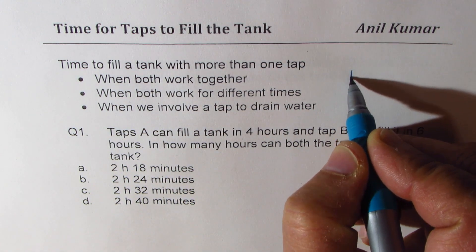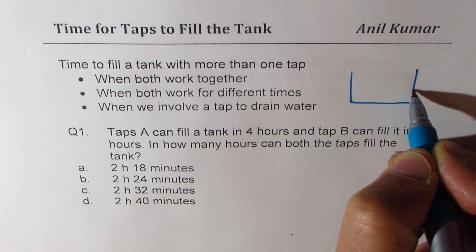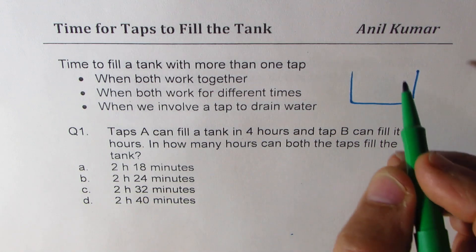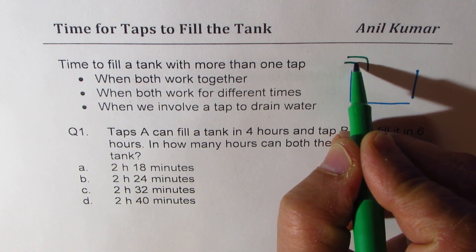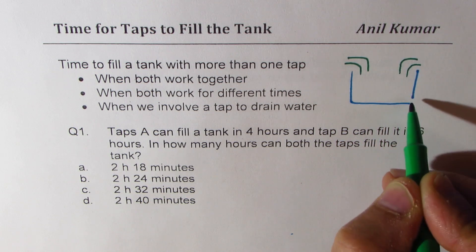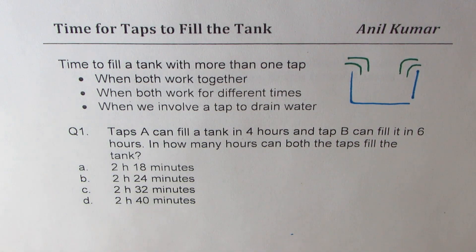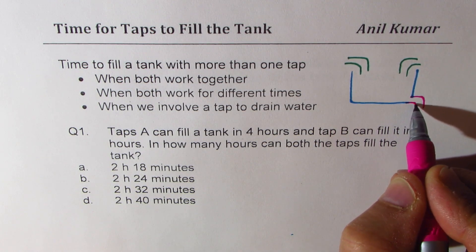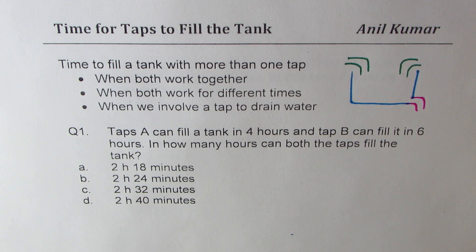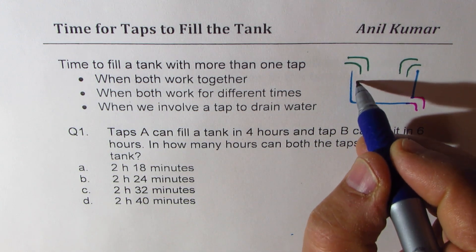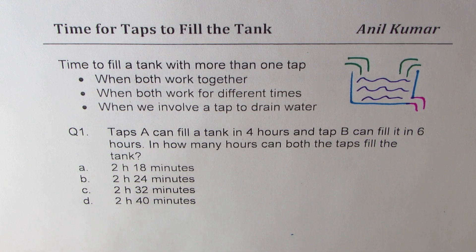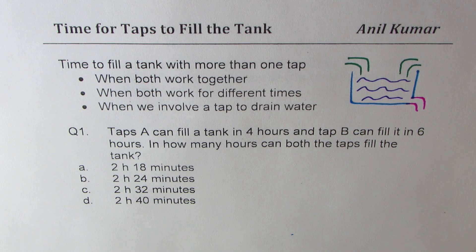The examples will involve a tank with two taps to fill it and one tap to drain it — a very practical situation. These taps will have different rates: different rates to fill and different rates to drain. I will show you a shortcut method to solve any question based on this concept.